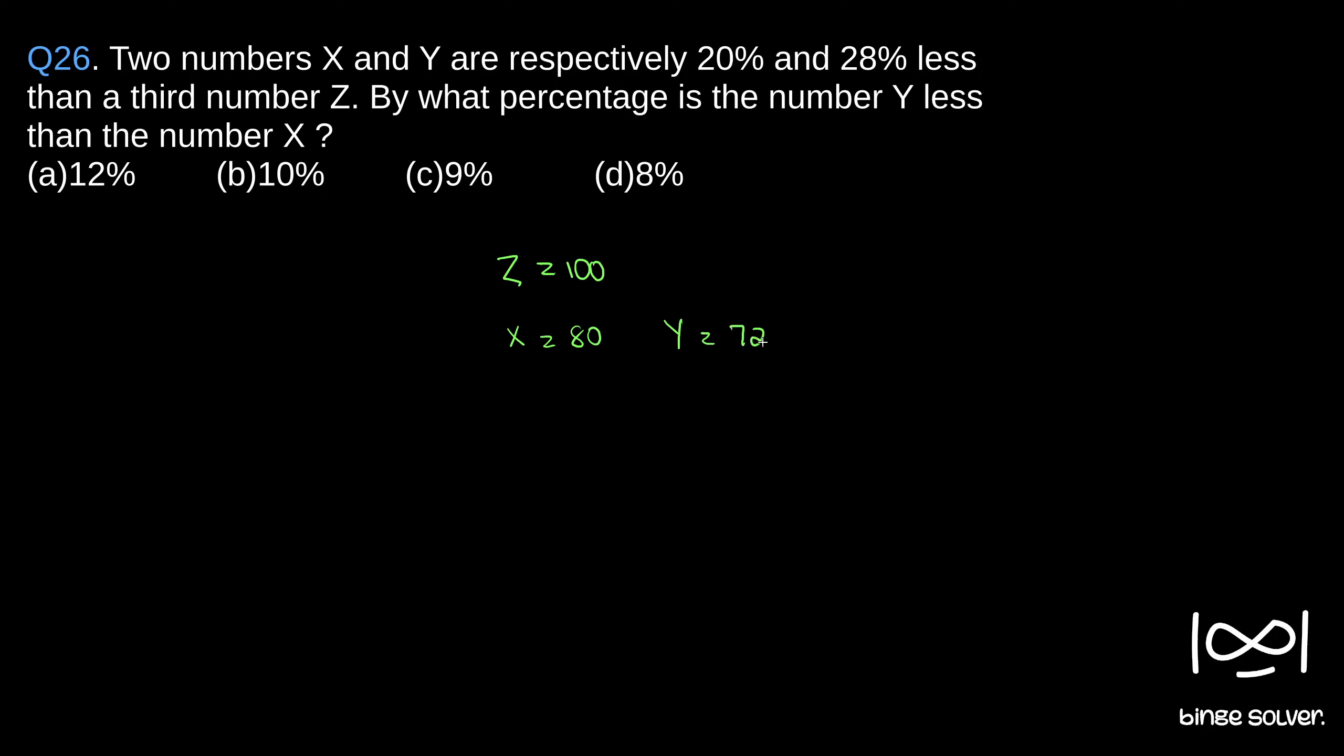So we got our X and Y. Now, by what percentage is the number Y less than the number X? The difference here is 8, so Y is 8 points less. To calculate the percentage, we have to divide it by the value of X, which is 80. That is 10%, so Y is 10% less than the number X.